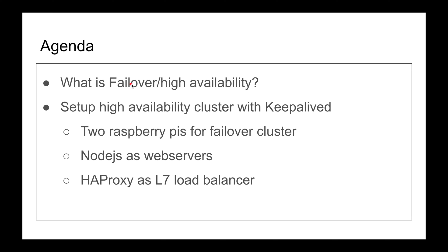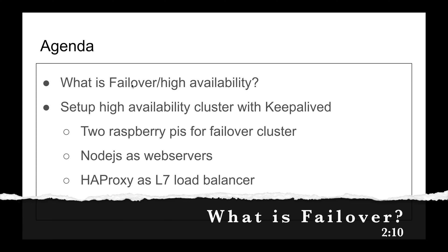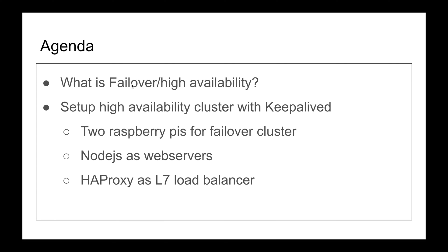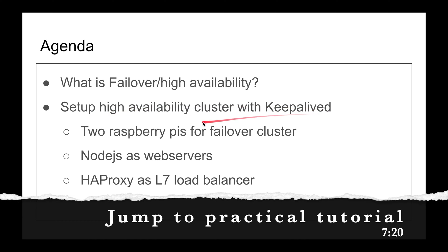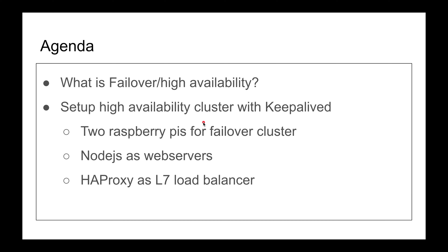In this video we'll briefly cover what failover and high availability are — it's a little different from load balancing and operates at a lower layer in the OSI model. Then we're going to use two Raspberry Pis to achieve high availability. I'll build a cluster using Keepalived with two Raspberry Pis as a failover cluster — one Raspberry Pi running HAProxy as a load balancer and another also running HAProxy. So essentially I have two load balancers, both pointing to a bunch of Node.js web servers on the back end running on Docker.